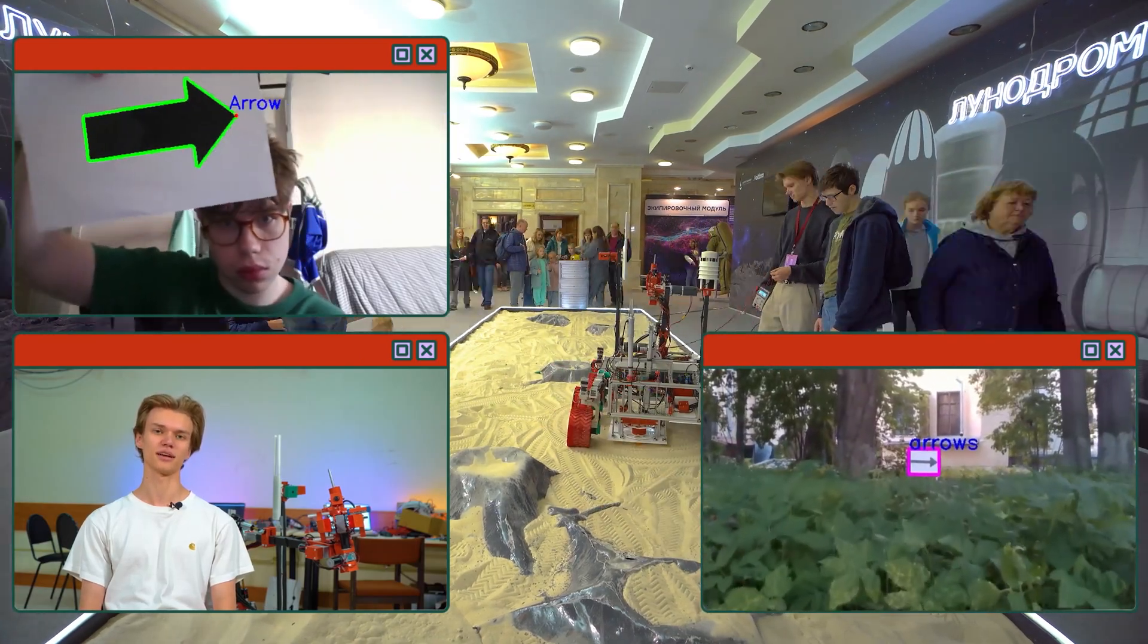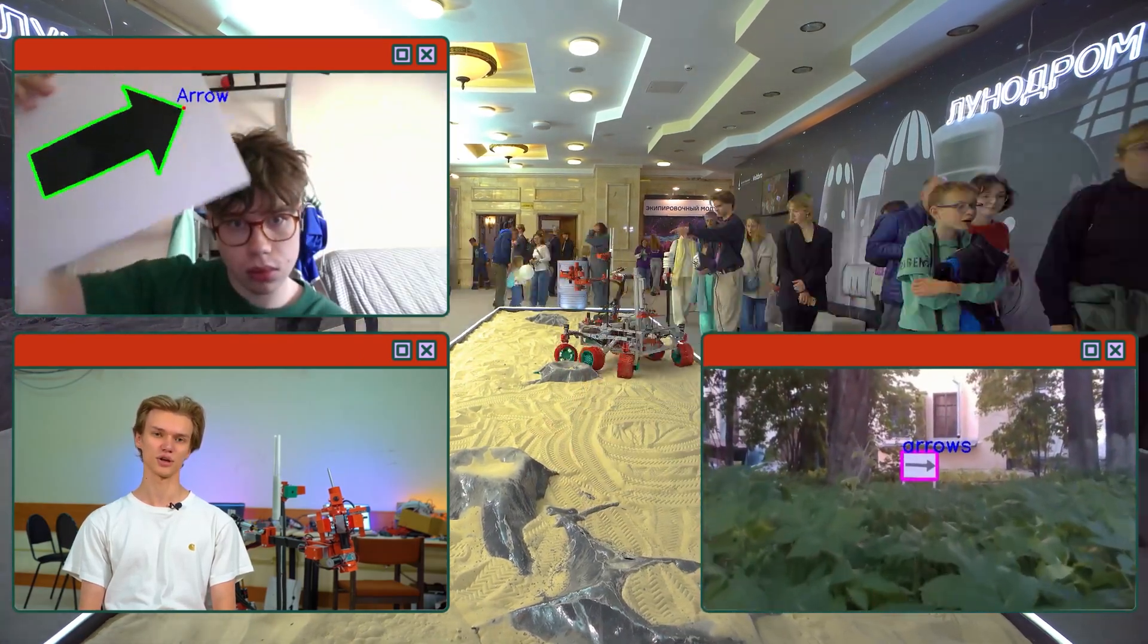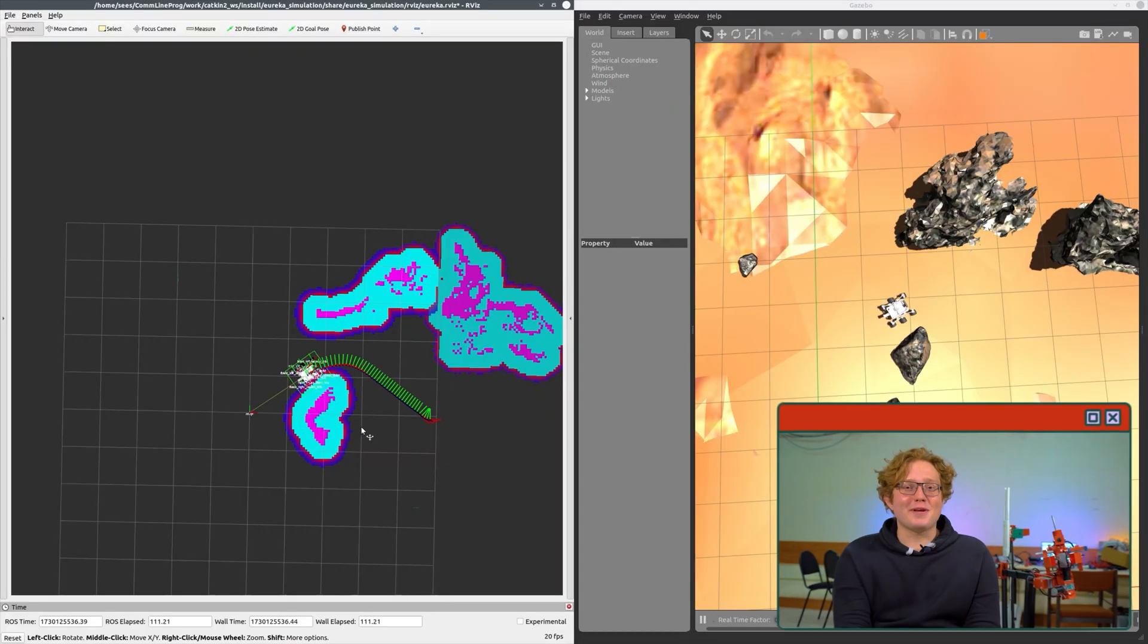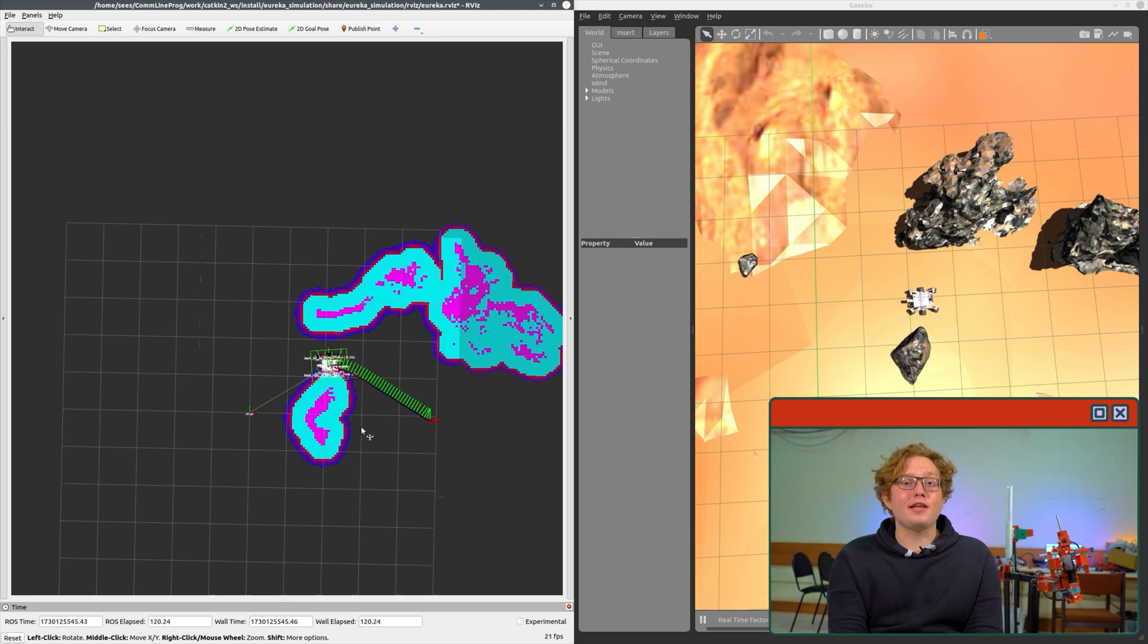During the autonomous mission, Eureka will use the YOLO V8 nano neural network for image detection and the NAV2 stack for terrain traversal. GPS, odometry, IMU, and depth camera data are used for SLAM.